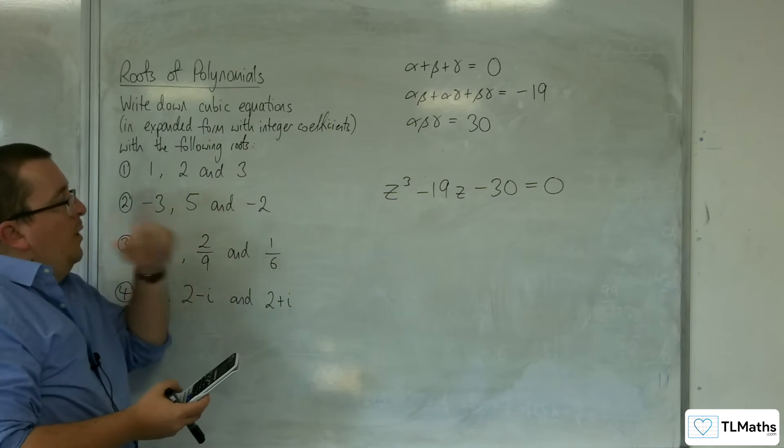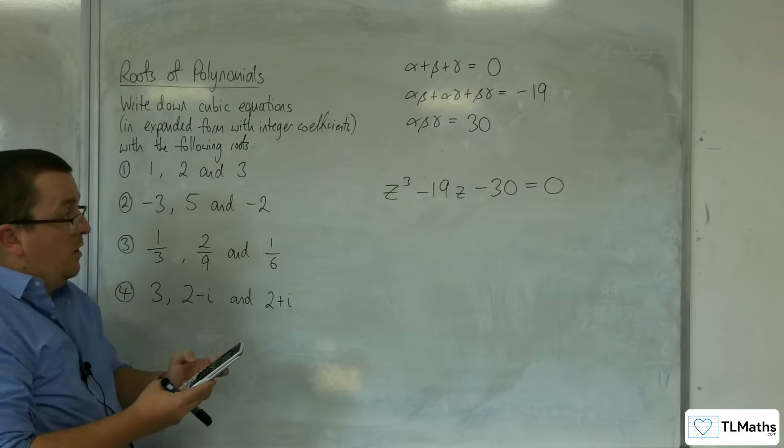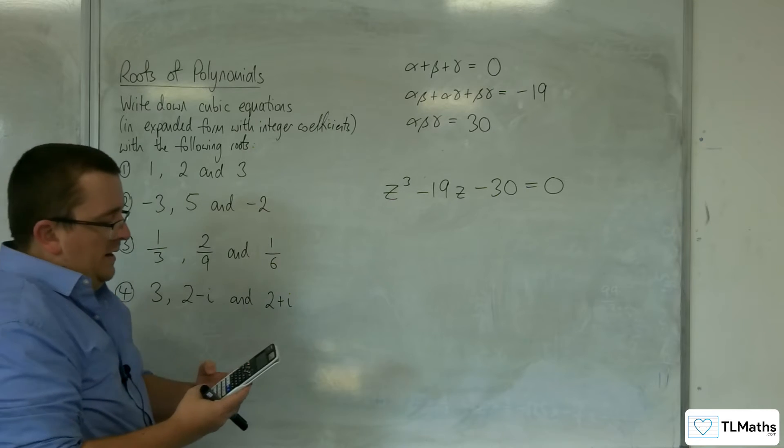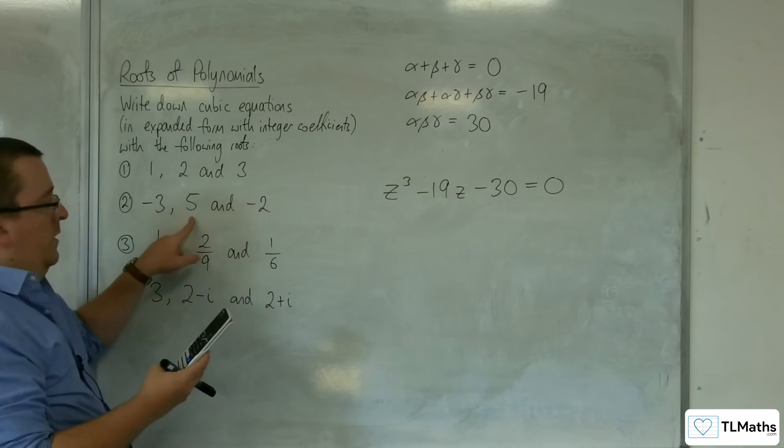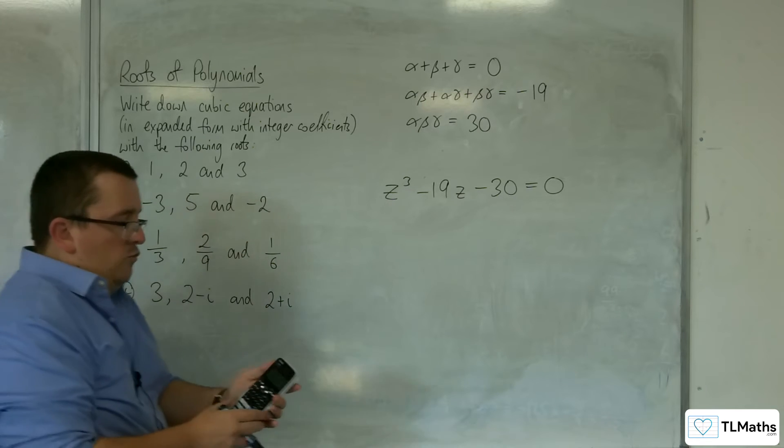So pop that into our polynomial solver, degree 3, we have 1, 0, minus 19, and minus 30, and we get 5, minus 2, and minus 3. And so that one is correct.